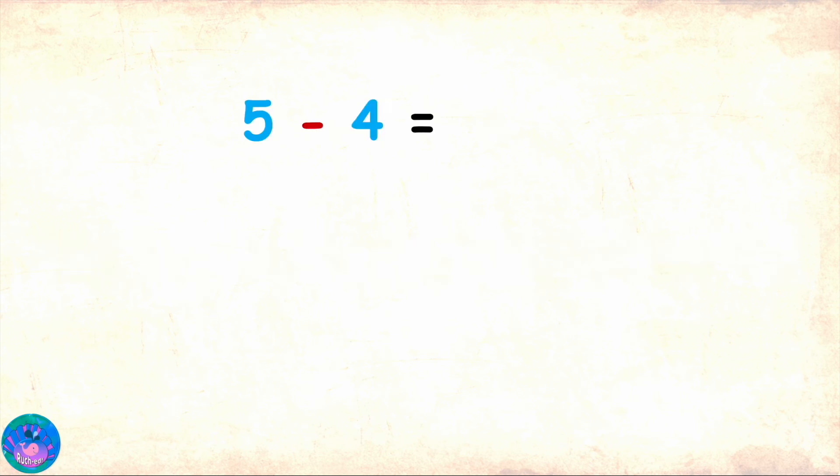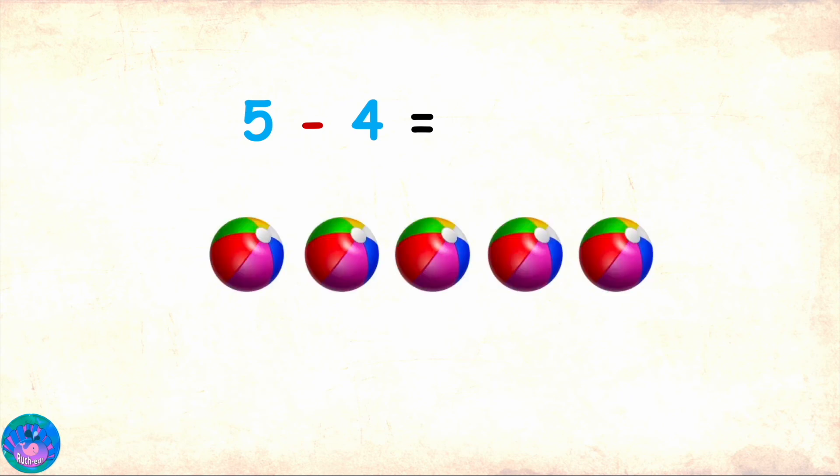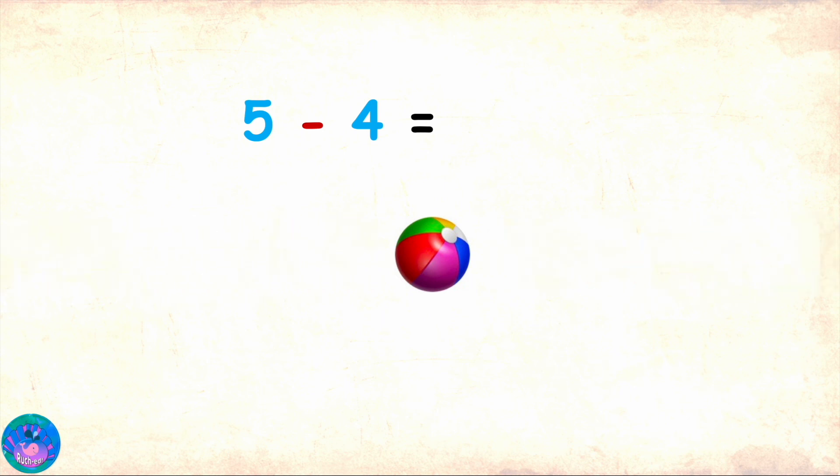And here we have 5 minus 4. Let me take real balls this time. So, I have 5 real balls. So, since they are real objects, I can take them away. So, I have to do 5 minus 4. Now, we have to subtract 4 which means I can remove 4 balls. 1, 2, 3, 4. And we are left with just 1. So, 5 minus 4 equals 1.